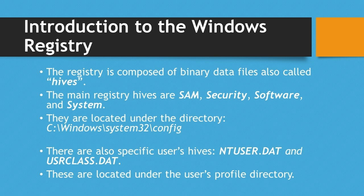The registry is composed of binary data files, also called hives. The main registry hives common across different versions of Windows are the SAM, Security, Software, and System hives. These hives are located in the system32 config folder under the Windows system directory. There are also registry hives specific to each user: the NTUSER.dat and the UserClass.dat hives, located under the user profile directory, with paths that differ slightly between Windows XP and newer versions.